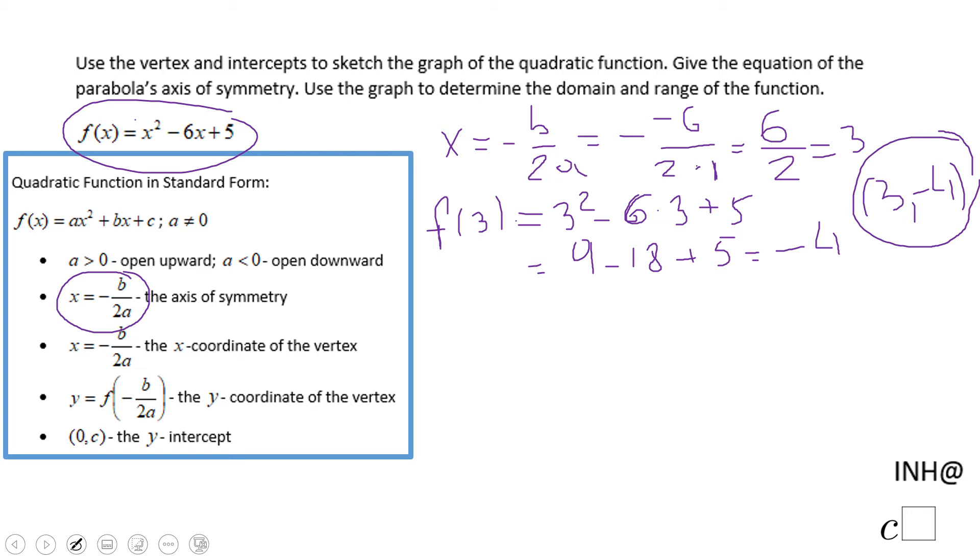Now they ask us to sketch the graph. For that reason I'm going to find the y-intercept. I'm going to make x equals 0, which in this case is very simple. f of 0, if you plug 0, what do you get? 0 squared minus 6 times 0 plus 5, you get 5. So obviously that y-intercept is 0 and 5.